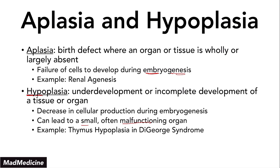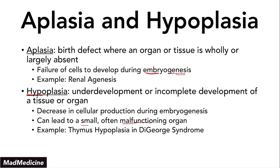In this lecture we talked about atrophy — essentially undoing hyperplasia and hypertrophy via the ubiquitin-proteasome degradation pathway to destroy extra organelles and proteins, and apoptosis to eliminate excess cells. In aplasia there is no development of the tissue; in hypoplasia there is underdevelopment. All of these concepts are very important and will be tested. Thank you so much for watching — don't forget to subscribe, and we'll see you back in the next lecture.